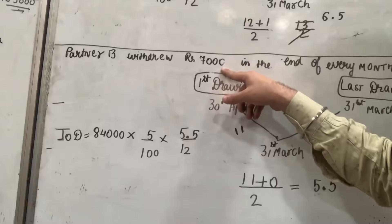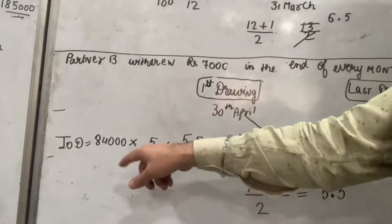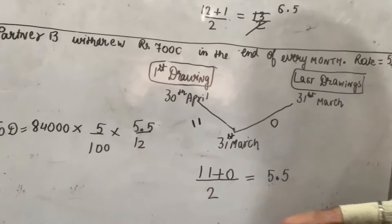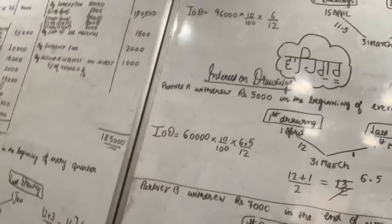Or meri paas drawings, interest on drawings kitne hogi? Sar month mein 7000 nikala to 12 months 84000. Uska kitne percent? 5% into 5.5 upon 12.